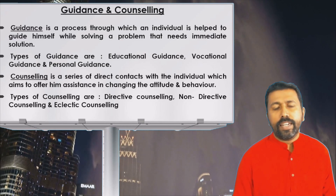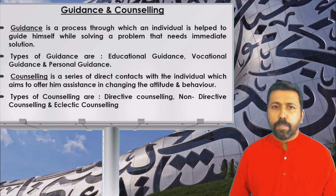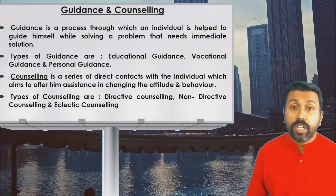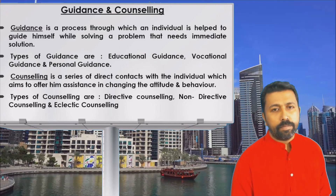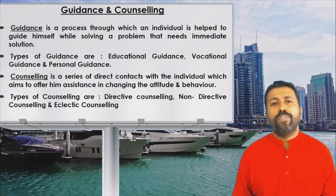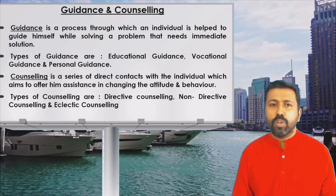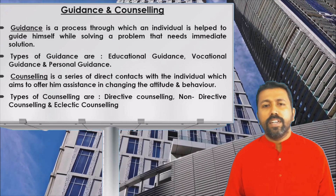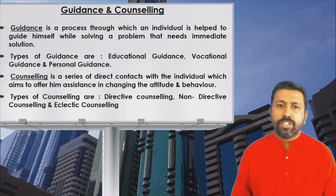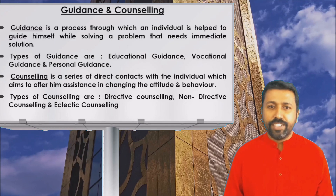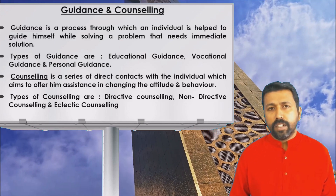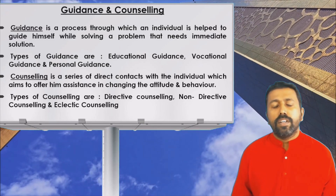The last topic in psychology is guidance and counseling. Guidance is a process through which a person gets support from others that helps in moulding his character. Types of guidance include educational guidance, vocational guidance, and personal guidance. Counseling involves a series of direct contacts between individuals that helps in changing the attitude or behavior of a person. Guidance sometimes happens only once, but counseling is a continuous process involving interaction, discussion, data collection, and analysis. Types of counseling include directive counseling, non-directive counseling, and eclectic counseling. This summarizes the theoretical aspects of educational psychology.